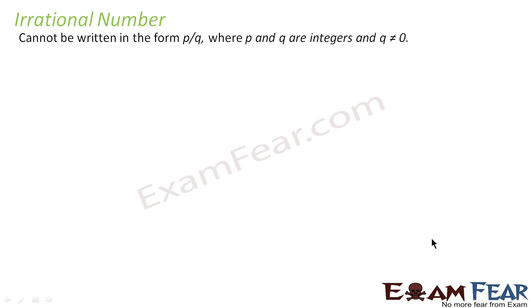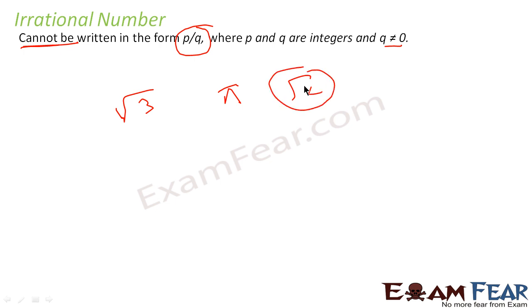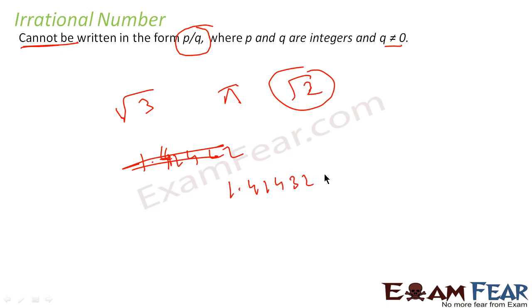Let's try to understand irrational numbers. An irrational number, as you already know, is any number which cannot be written in P by Q form, where Q is not equal to 0. For example, we have √3, π, and √2. These numbers you cannot write in P by Q form. √2 is actually 1.41432... it keeps going on till infinite. The decimal part is infinite, so this cannot be written in P by Q form. Such numbers which cannot be written in P by Q form are called irrational.